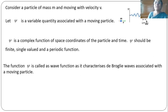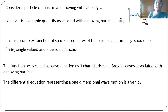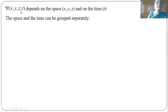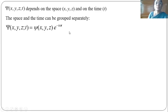The function psi is called the wave function as it characterizes the de Broglie waves associated with the moving particle. The differential equation representing a one-dimensional wave motion is given by ∂²psi/∂t² = v² ∇²psi, where v is the velocity of the particle and psi is the wave function depending on space coordinates x, y, z and time t. In this wave function, let us separate the space coordinates and time: psi(x, y, z) can be written as psi(x, y, z) multiplied by e^(−iωt).